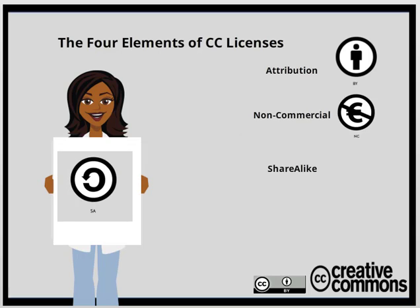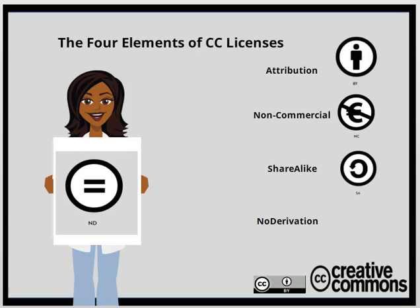The next element is share alike, also known as SA. The creator is making it known the work can be adapted and reused, but it must be licensed under the same license or a compatible license. This icon helps to grow the base of items available to use online. The fourth and final element is no derivatives, or ND, meaning users cannot share any adaptations of the work.